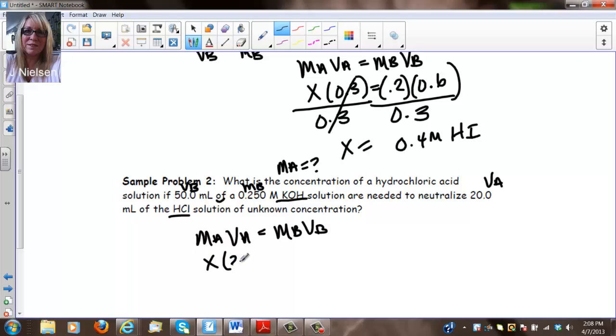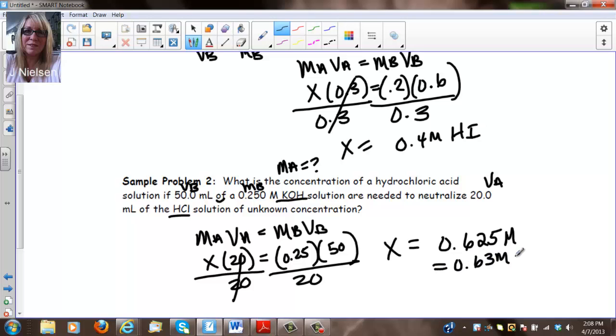Again, using my formula MAVA equals MBVB. This is going to be X times 20 equals 0.25 times 50. I divide both sides by 20 and I get X equal to 0.625 molar. I would probably round this to 0.63 molar and that is the HCl.